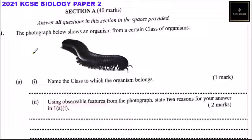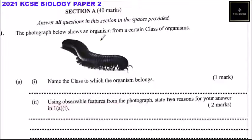This is the 2021 KCSE Biology Paper 2, Section A, which consists of 40 marks. You are instructed to answer all questions in this section in the spaces provided. Question number one: the photograph below shows an organism from a certain class of organisms.